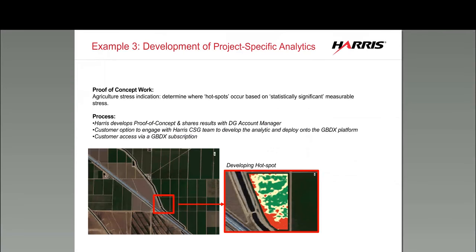For project-specific analytics, we have a whole professional services team at Harris Geospatial where we can help you develop proof-of-concept applications and even production-level workflows that deploy onto the system on your behalf, so you can run the workflows on the system. We really want to work with you to help you succeed. What you see here is a proof-of-concept we did in a wine-growing region using agricultural analytics to identify developing hot spots in a field — the kind of prototype workflow we're well-equipped to do.